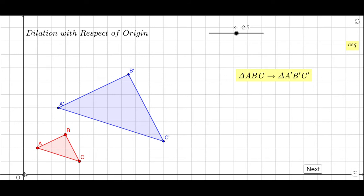I can use this slider here and move it left and right. When I set k equals to one, these triangles overlap, the scale factor is one. Once I go less than one, the image is getting smaller, we call this a reduction.